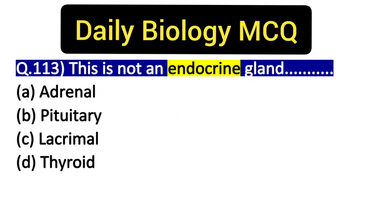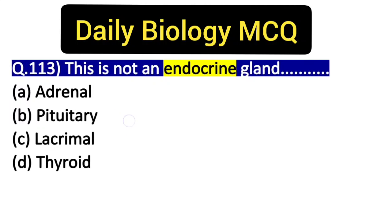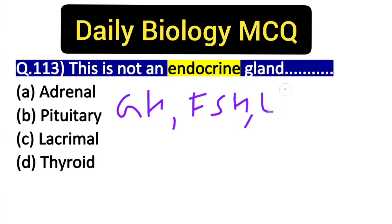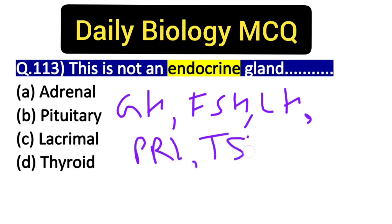If I talk about pituitary glands, many hormones are released from the pituitary gland: growth hormone, follicle stimulating hormone, luteinizing hormone, prolactin, and thyroid stimulating hormone.